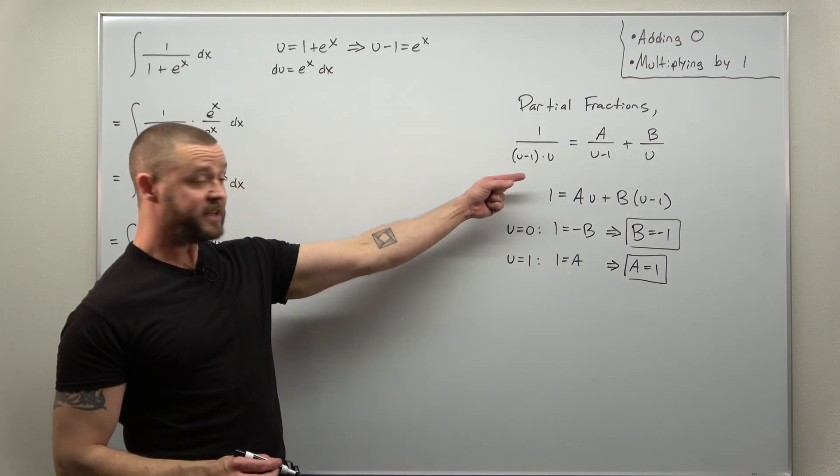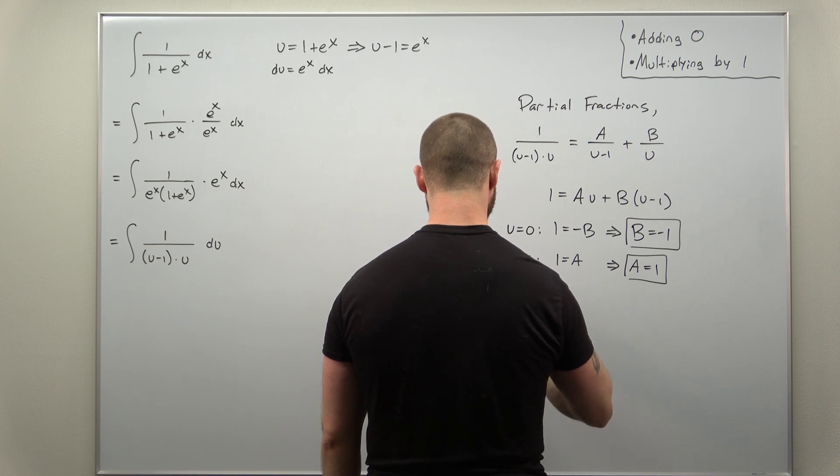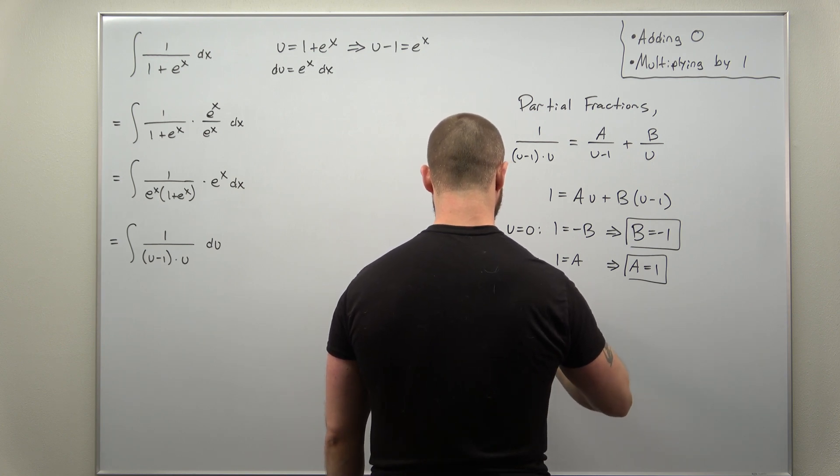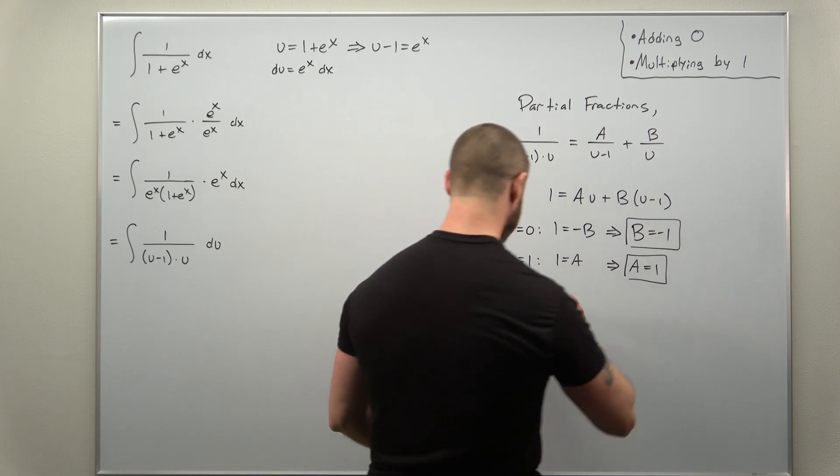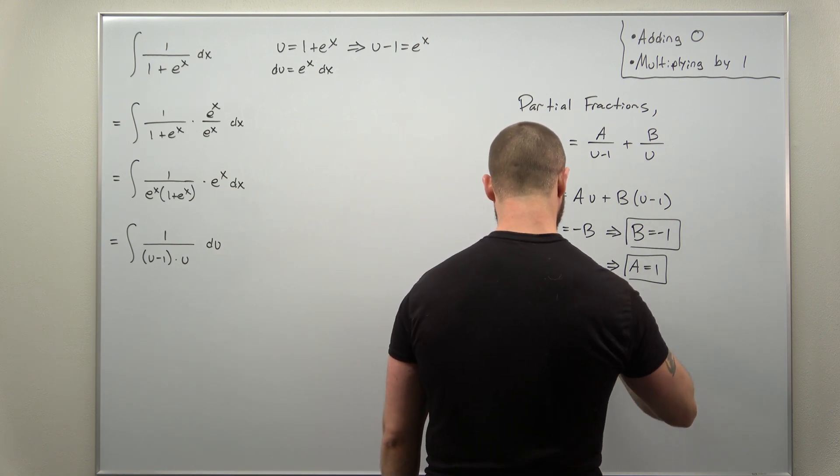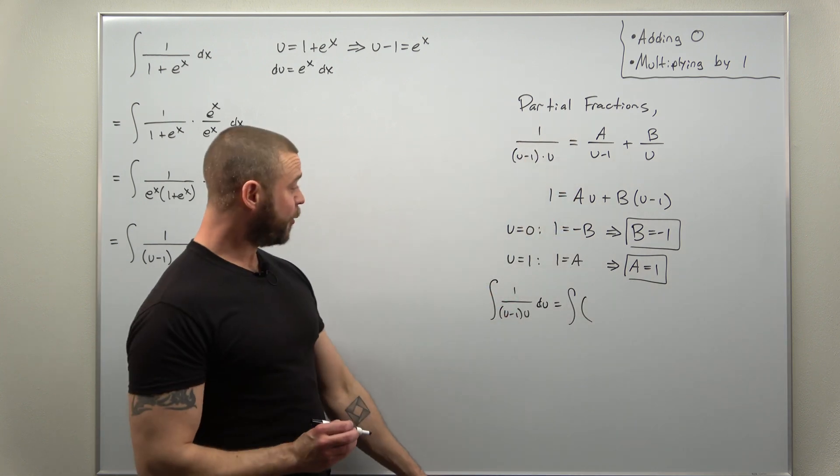Now we can easily integrate this. We basically have rewritten our function here, the integral of one over u minus one times u. We've rewritten that in a better form.